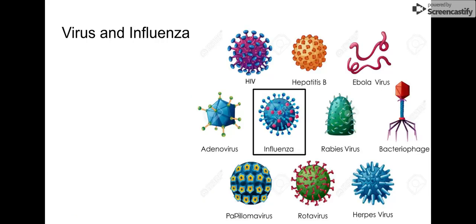We also have viruses. Viruses are not a cell. Viruses are not living. Viruses are going to be a container of various shapes, and that container is going to hold either DNA or RNA, but never both — viruses only contain one or the other. This DNA or RNA is going to be surrounded by a capsule, and that capsule is going to be covered with little proteins that can latch on to specific types of cells. Different viruses can infect different types of cells.